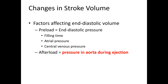Factors affecting end diastolic volume include preload, which is the end diastolic pressure; filling time, meaning how long the ventricle had to fill; atrial pressure, the force with which the atria contracts; and central venous pressure, the pressure in the veins returning blood to the atrium. More pressure in the veins brings more blood back into the atria, filling more blood into the ventricle. These three factors independently influence end diastolic volume, which in turn influences stroke volume.